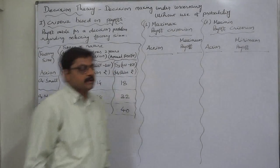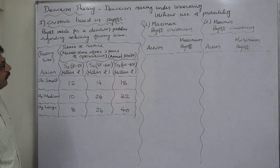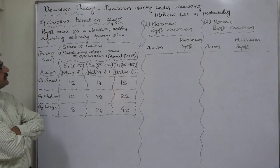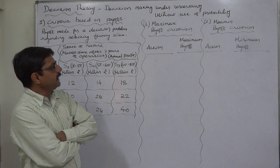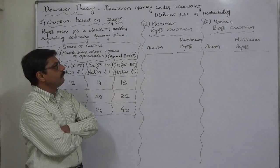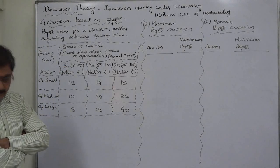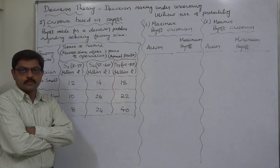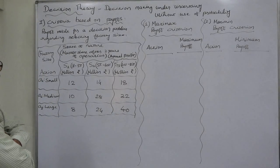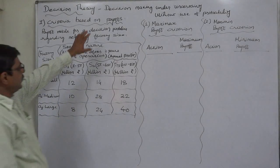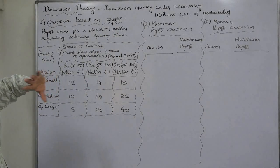Hello and welcome to decision theory. Now we are going to discuss case studies about decision making under uncertainty without use of probability. In the first phase, we are not going to use probability in this kind of cases.